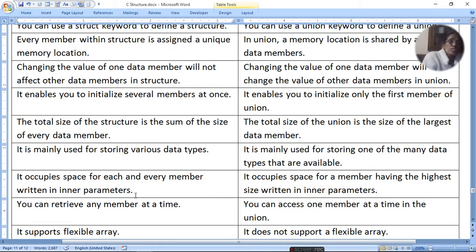The total size of the structure is the sum of the size of every data member. The size of the union is equal to the size of the largest member. Structure occupies space for each and every member written in the inner parameter. Union occupies space for members having the highest size written in the inner parameter.